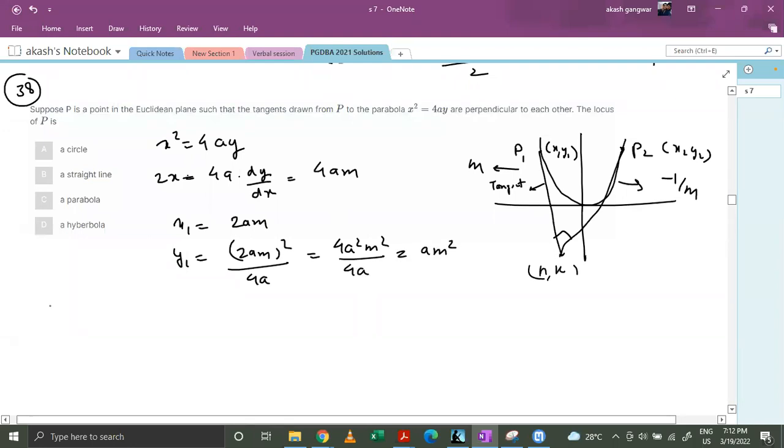Now let's try to find out the equation of tangent. You can see that y minus y1 upon x minus x1 equals to m. This gives us y minus am square upon x minus 2am equals to m.